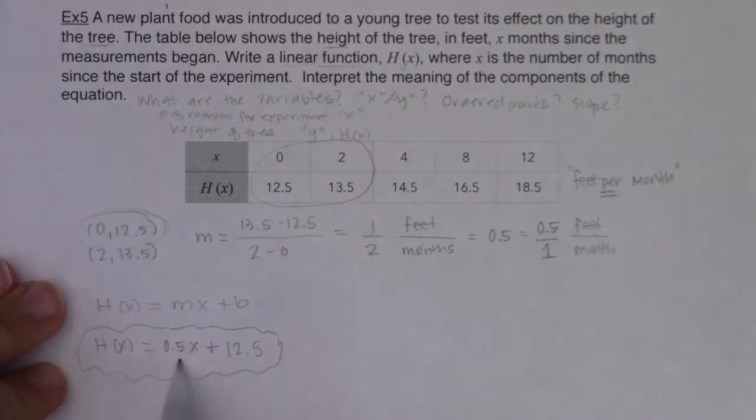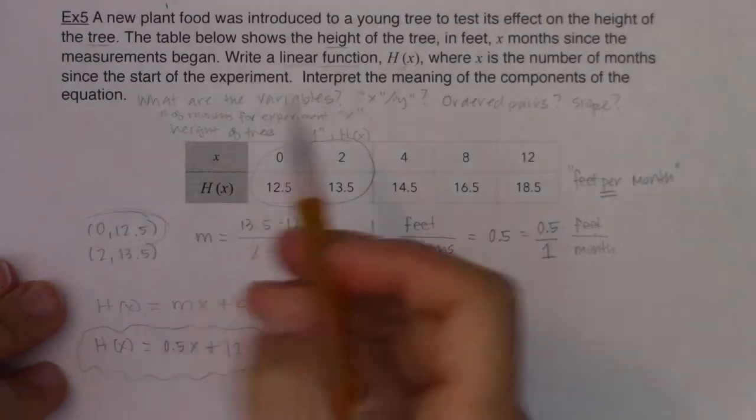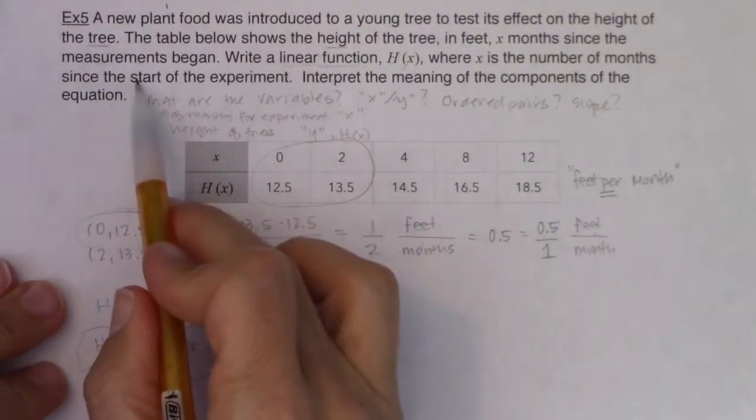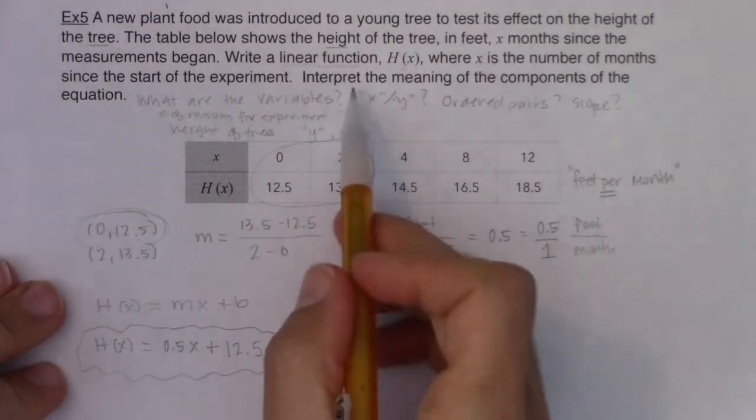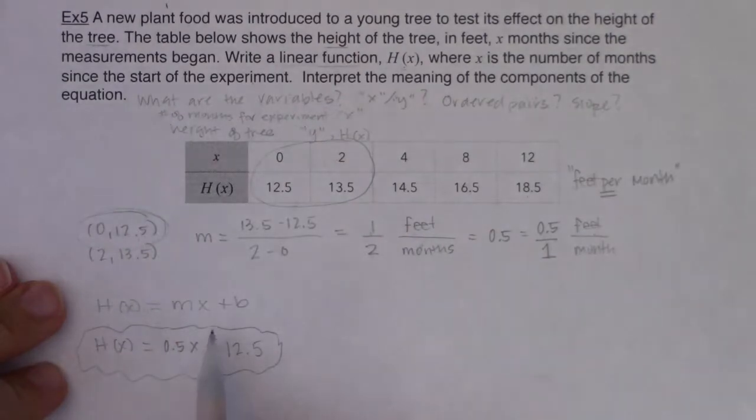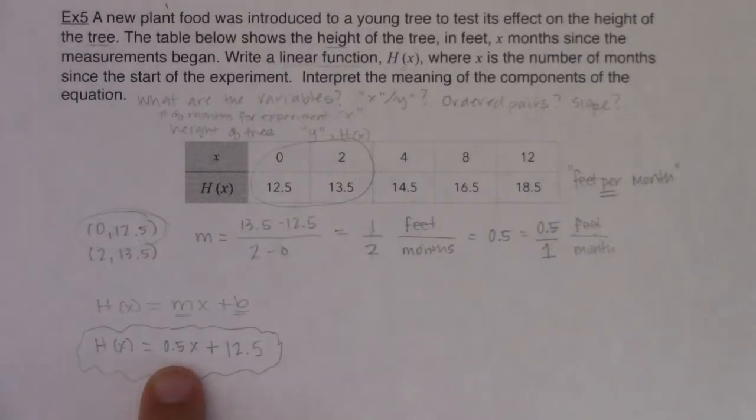I found it, I calculated the slope, I was given the Y intercept, and I put it into slope intercept form. And that was the first direction, write a linear function where X is the number of months since the start of the experiment, done. Now it says interpret the meaning of the components of the equation. When I say interpret, I want you to interpret the slope and I want you to interpret the Y intercept. So let's start to think about what this one half means and what this 12.5 means. So the first thing we're going to do over here, let's interpret the slope.